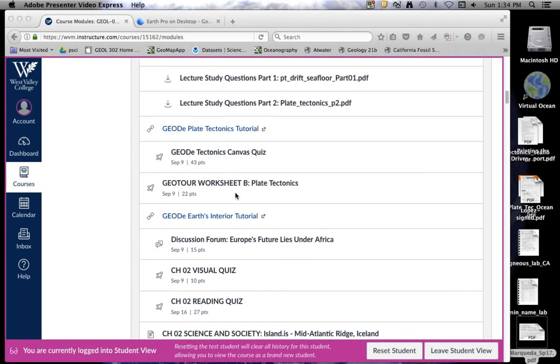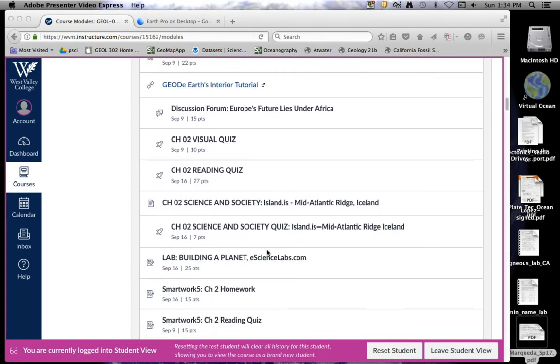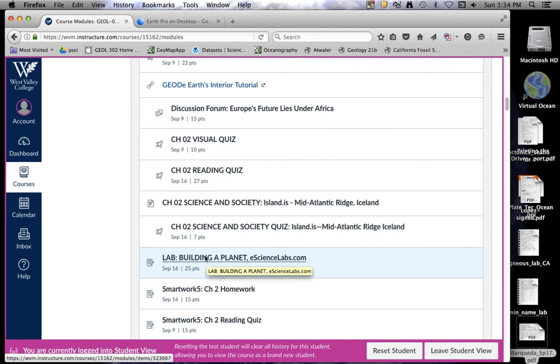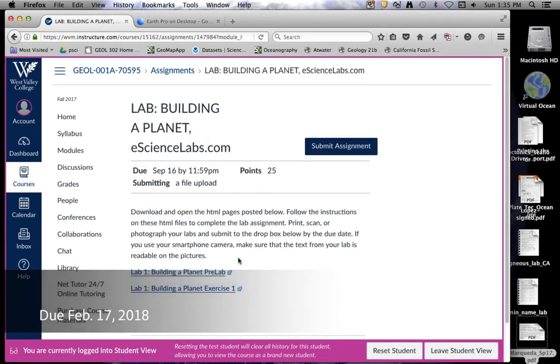What I want to do now is actually look at the eScience labs and your geology lab kit. You'll see that the eScience labs are now linked through Canvas. You'll click on this assignment. This is our first lab out of the lab kit, called Building a Planet, Lab 1. You'll click on this and it'll take you to a web page within Canvas.